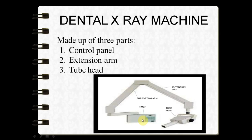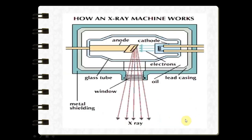The control panel also has certain control devices which regulate the x-ray beam, such as a timer which indicates the exposure time period. Then we have the extension arm, which helps suspend the x-ray tube head and also houses the electrical wires that extend from the control panel to the x-ray tube head.